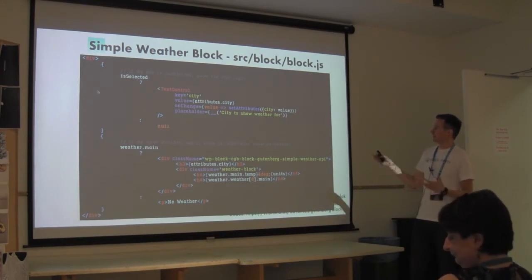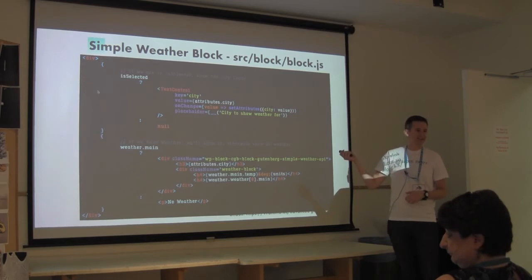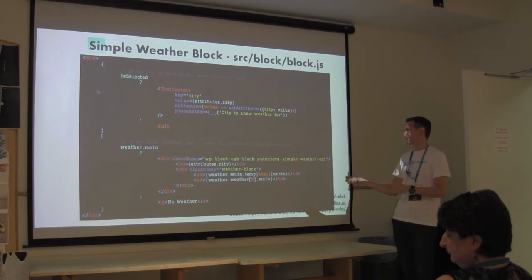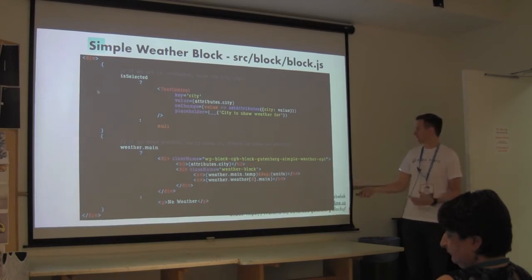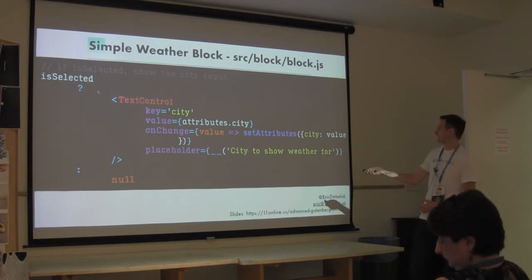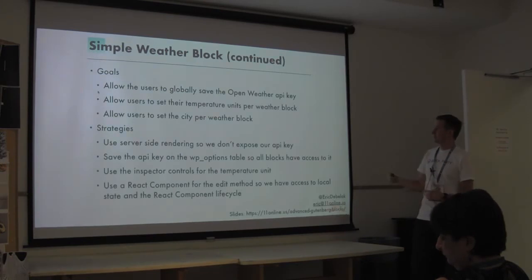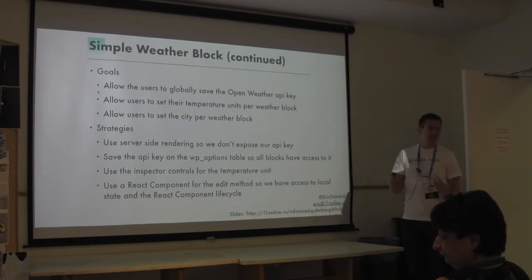We have a text control that sets state for our API key so we can save it locally. When you click the button, that saves the API key to the database, and it provides a helpful isBusy pulled from state. Further down in the render - this is the second item in the array - we say: is it selected? If so, show a text control where they can set the city. Starting to see some patterns: use onChange, set attributes. Then below that, if we have weather, let's show it; otherwise show no weather. What are our goals? We wanted users to globally save the API key but set other controls per block. We used server-side rendering, saved the API key on the options table, used inspector controls, and used the React lifecycle.